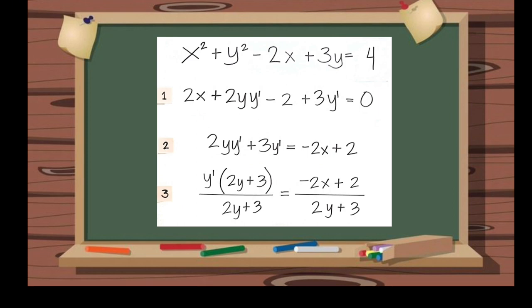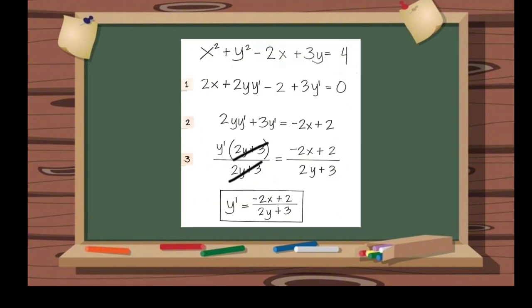So, we can divide both sides of the equation by 2y plus 3, so that we can cancel out this one. Therefore, y prime is equals to negative 2x plus 2 over 2y plus 3.